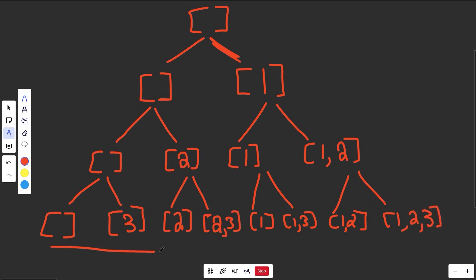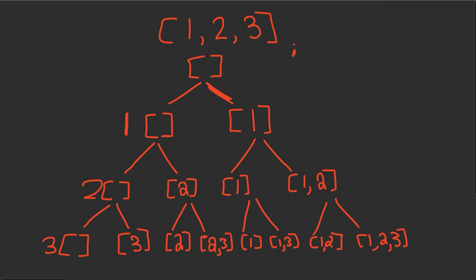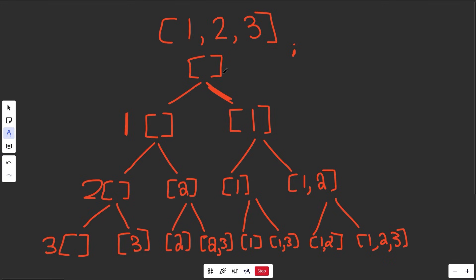Those are all of our solutions. We know these are leaf nodes because we've considered all numbers — one, two, and three. We can track this with an index i: at the first level i is at position zero, then one, then two, and at the very end i goes out of bounds. This shows all the different solutions we'd get, but we didn't draw it in the order the computer would actually traverse them.